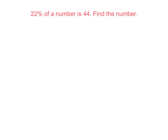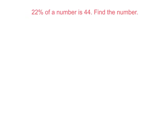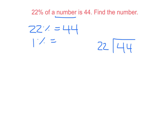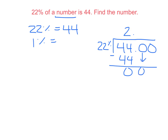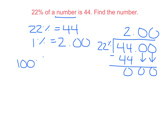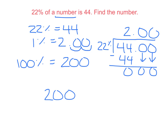For the third practice problem, we have 22% of a number is 44. We know that 22% is equal to 44. We can find our 1% by dividing 44 by 22%. 22 goes into 44 two times, which equals 44. Subtract and you get 0. Bring down the 0 — 22 goes into 0, zero times. Bring down our last 0 — 22 goes into 0, zero times. So our 1% is 2.00. We're looking for the whole, so multiply by 100 to get 200. So 22% of 200 is equal to 44.